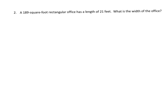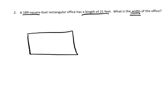Let's try this with a word problem. It says a 189 square foot rectangular office has a length of 21 feet. What is the width? So we know the length is 21 and we don't know what the width is. We can imagine it looking like this: the length is 21 feet and we don't know what the width is.